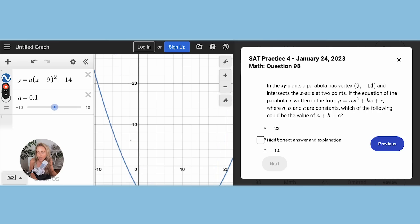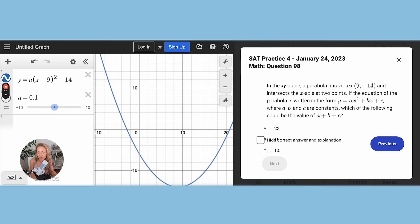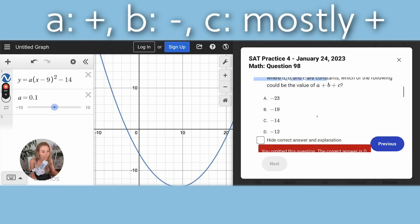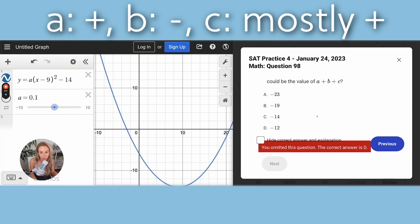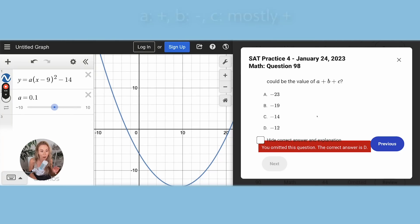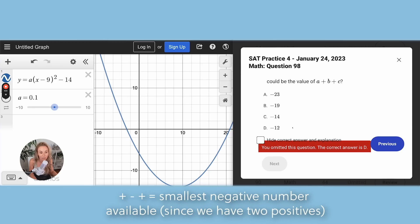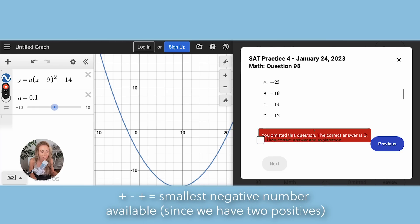So A has to be positive. C for the most part is positive. The only one that's negative is B. So use your logical reasoning. If A and C are positive and B is negative, you've got to pick the smallest negative number out of the bunch. And that's why it's going to be D.